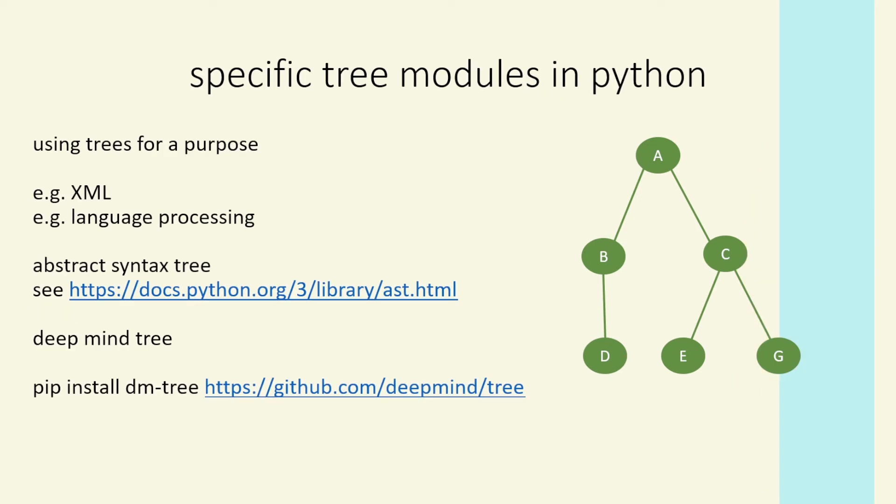Specific areas we might see trees in: the model, abstract data model of an XML document is a tree. And in language processing, we use it for different types of language representation. So for example, abstract syntax tree, many different areas. Here's an example of deep mind, deep learning. So we can use trees and graphs in many, many areas of computer science.